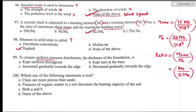Question number ninety-nine: to ensure uniform pressure distribution, the thickness of the foundation should be decreased gradually towards the edge. Option D is the right answer, because bending moment is highest at the column face and decreases towards the edge, so gradually decreasing thickness achieves uniform pressure distribution.